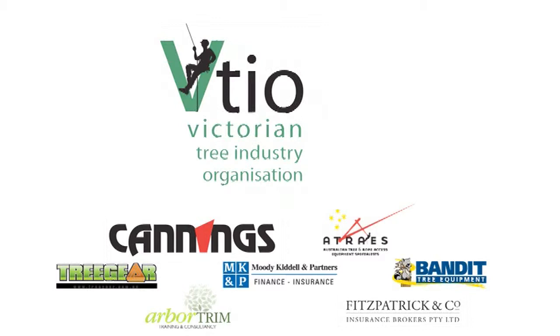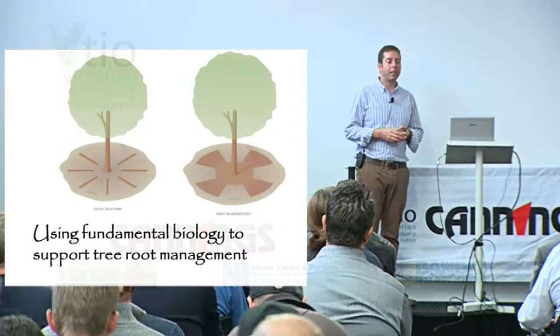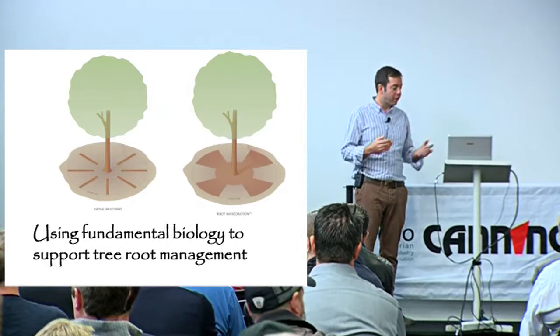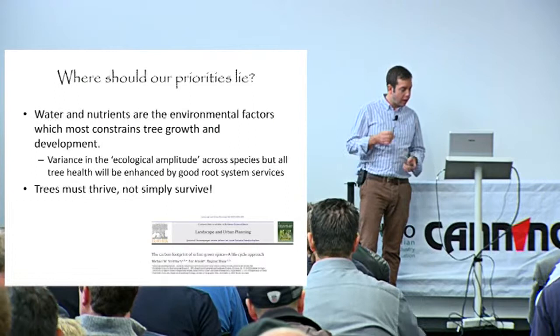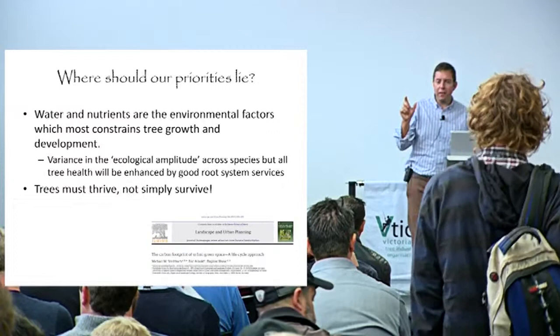I mentioned earlier that I wanted to move on to root management in established trees, or trees in situ. I'm going to talk about a whole range of aspects for trees that are already established in their urban or peri-urban situation. One of the things we really need to be concerned about is both water and nutrients - they're the environmental factors that really contribute most to tree growth and development.